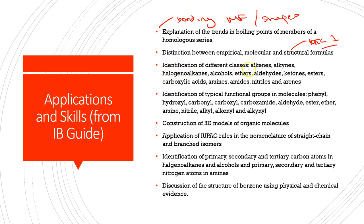We'll look at how to identify the different classes of organic compounds — there are quite a few we need to understand. We'll look at identification of different functional groups within larger molecules, constructing 3D models of organic molecules, and the application of IUPAC rules — the naming convention used internationally, which is the only naming convention we use. We'll also be able to identify primary, secondary, and tertiary carbon atoms in halogenoalkanes and alcohols, and discuss the structure of benzene with physical and chemical evidence.